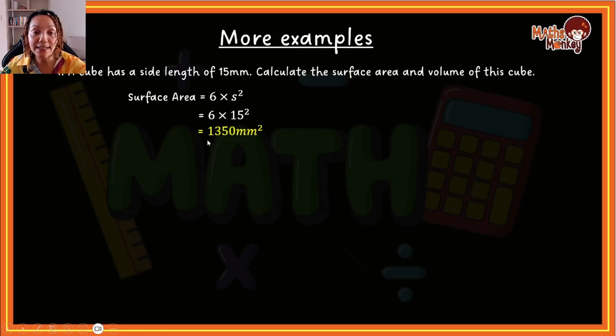6 multiplied by 15 to the power of 2 is 1,350 millimeters squared. Okay. So we're just taking the formula, we're substituting the side in, squaring it, and it gives us the answer. And we must remember that the units is always units squared when working with surface area.